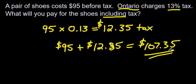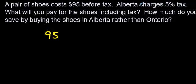That's the total price with tax right there — that's the answer we were looking for. The next question: the pair of shoes still cost $95, but in this case it says Alberta, which is another province here in Canada, charges 5% tax. That's a lot lower than 13% tax.